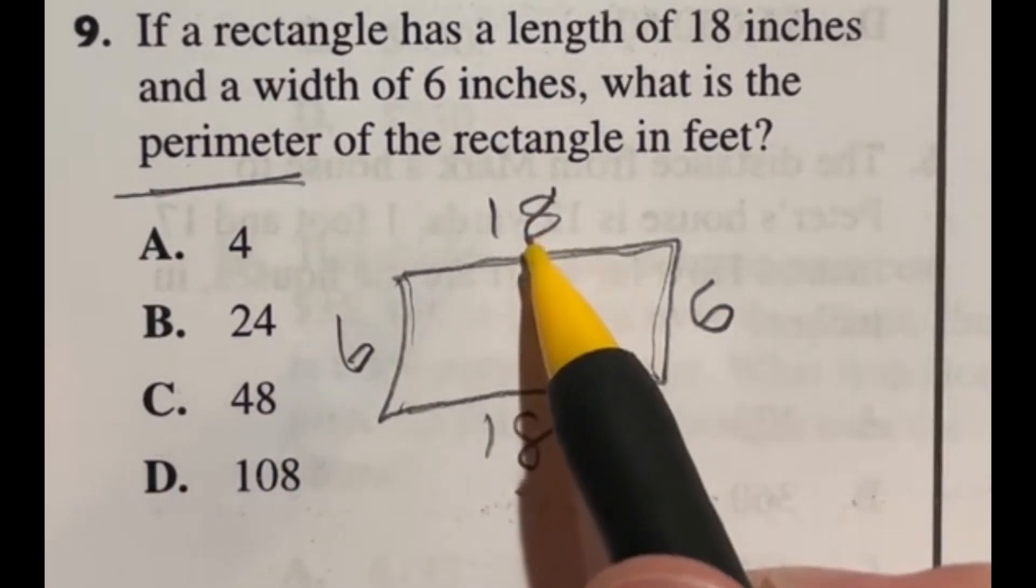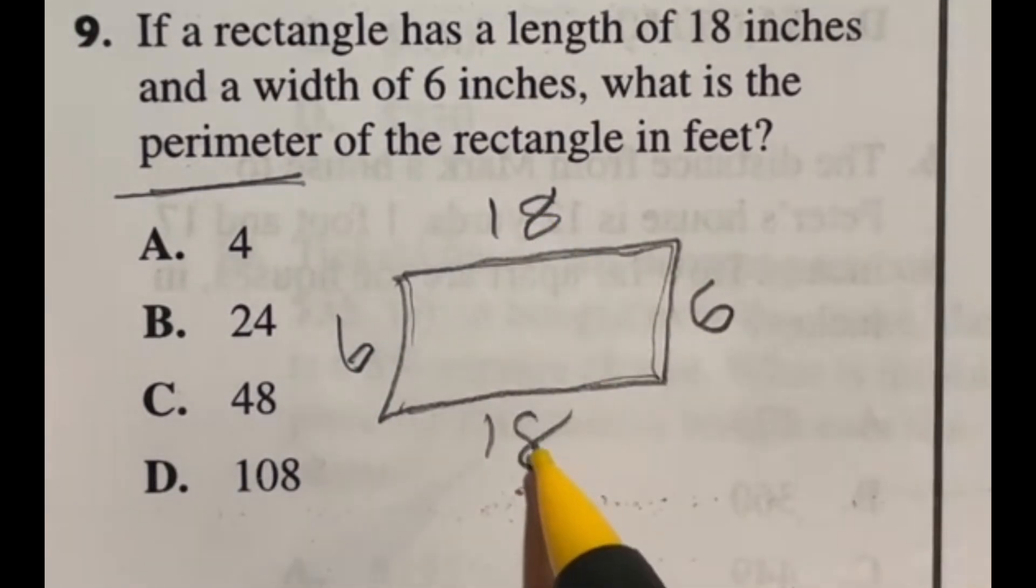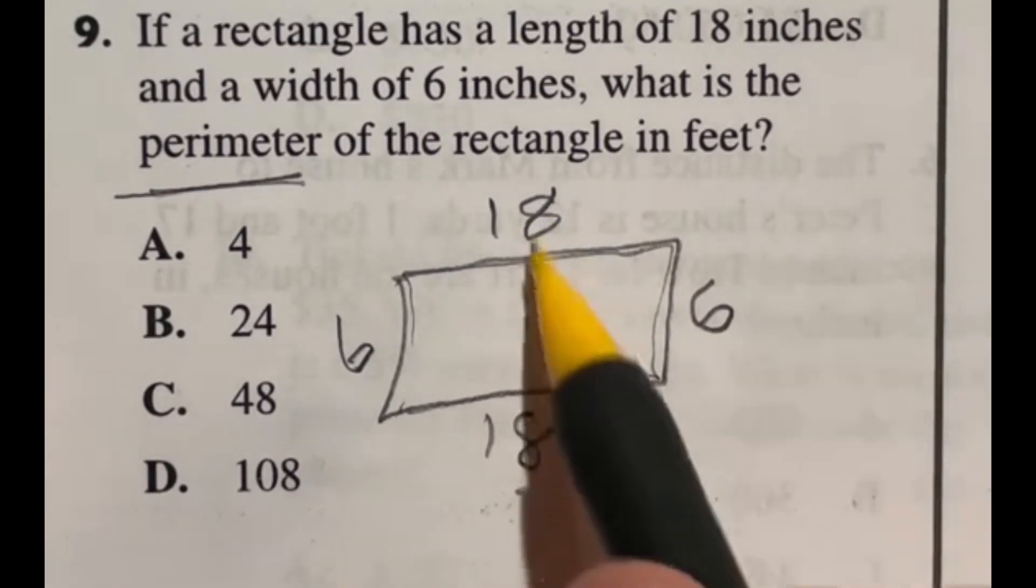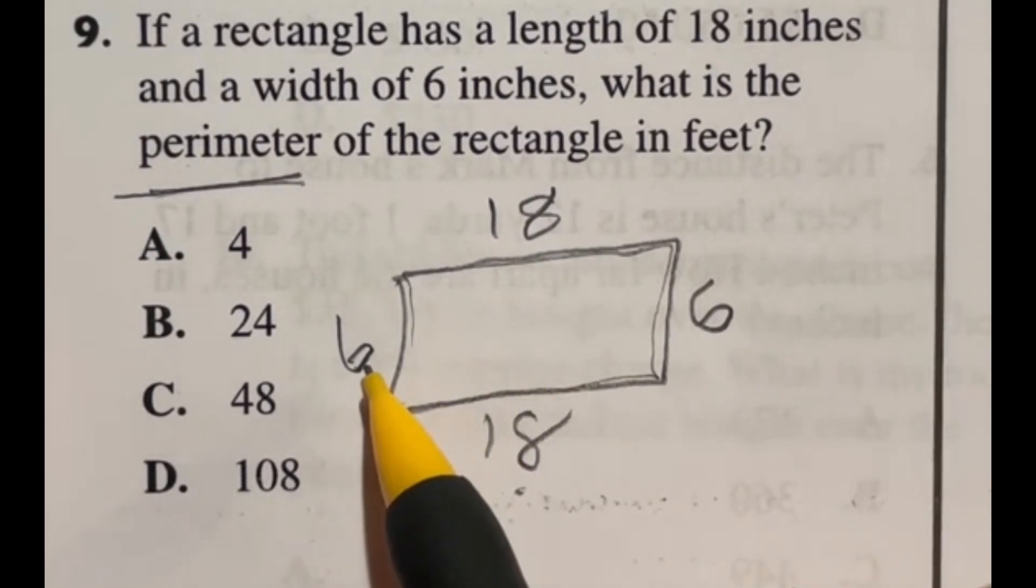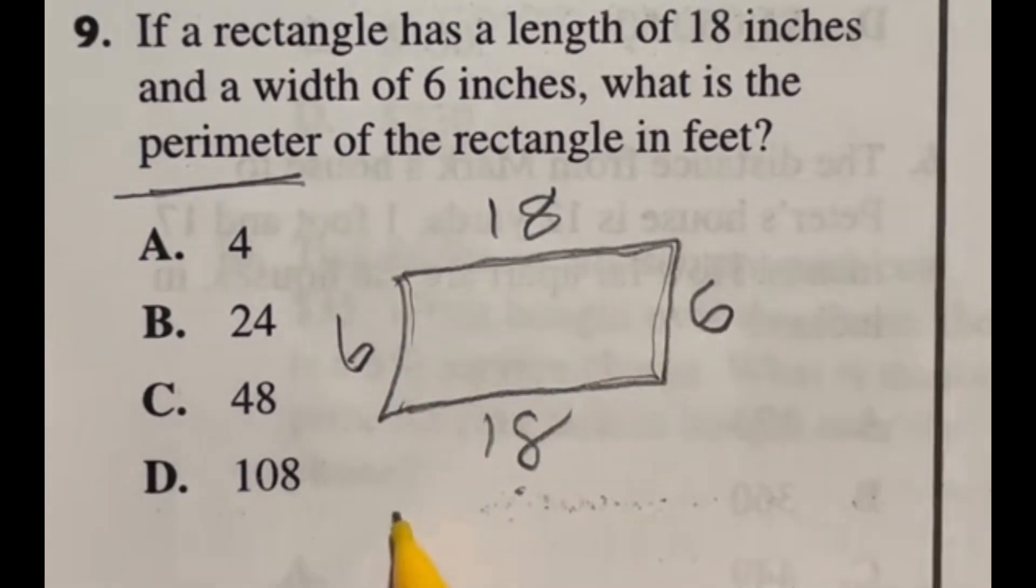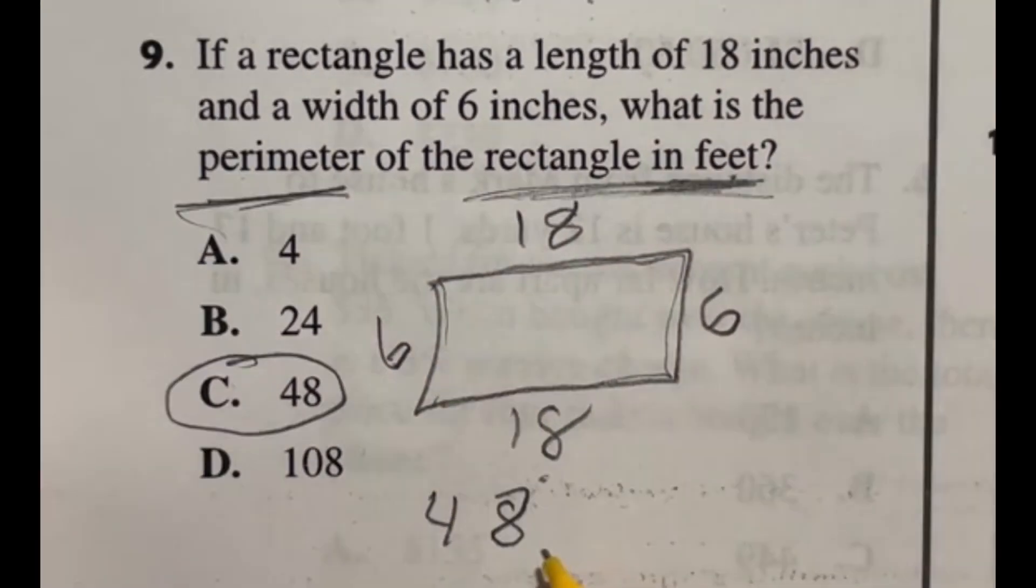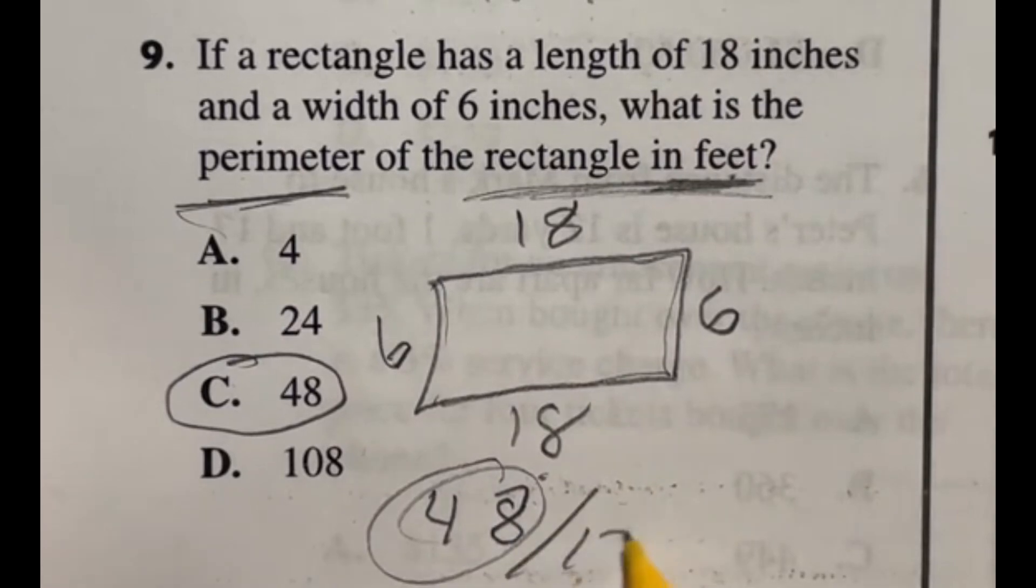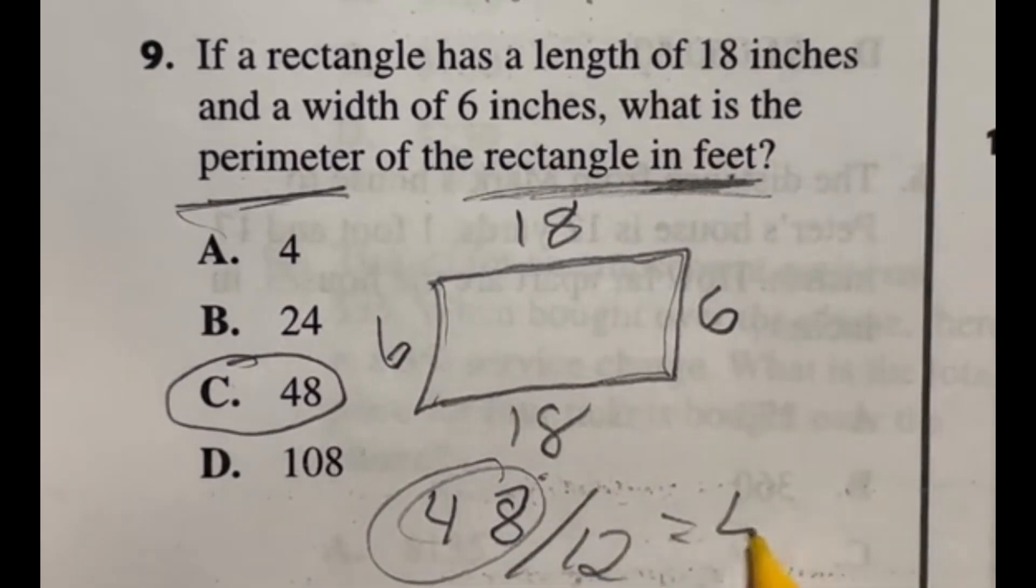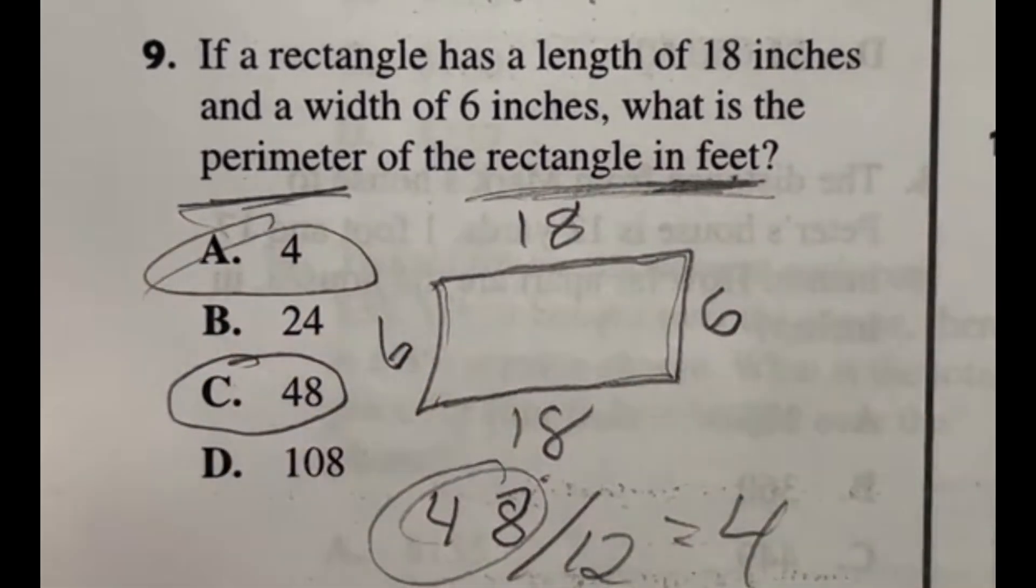First off right off the bat I would probably say 18 and 18 is going to end up giving you 36 plus another 6 on top of that one is going to end up giving you 42 and then another 6 is going to be a total of 48. So there are 12 inches to a foot so you would have to take this answer and then just divide that by 12 to give you the real final answer of 4 which is answer A.